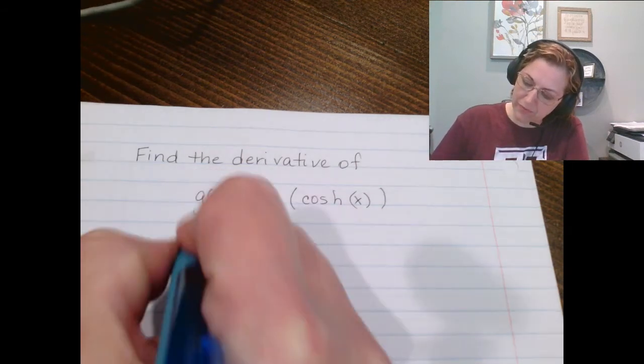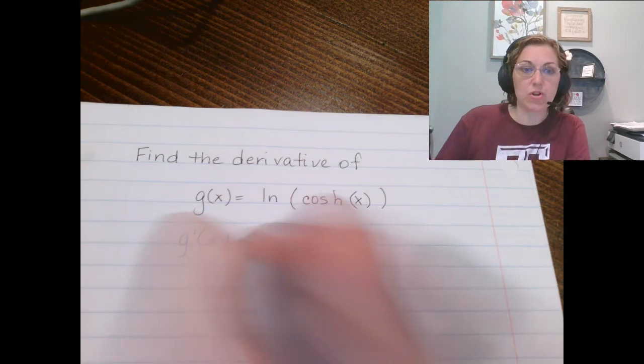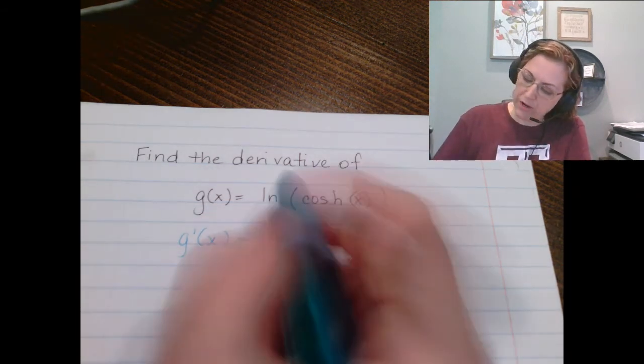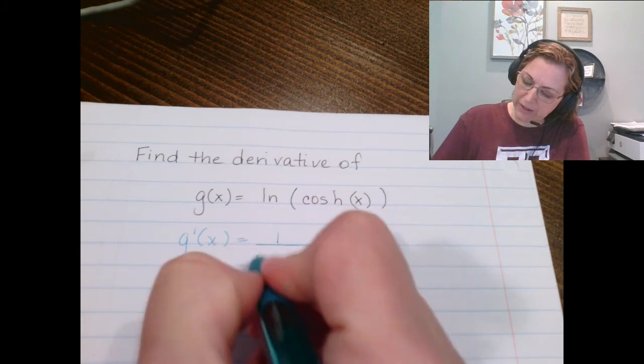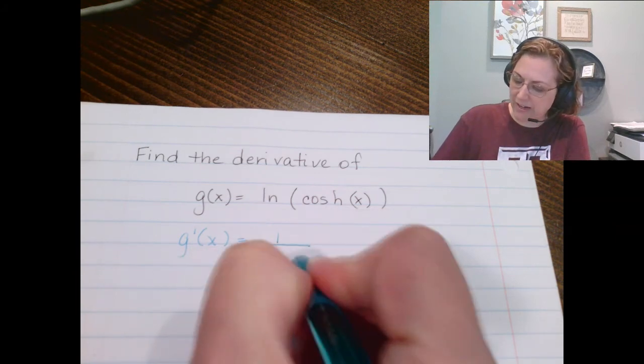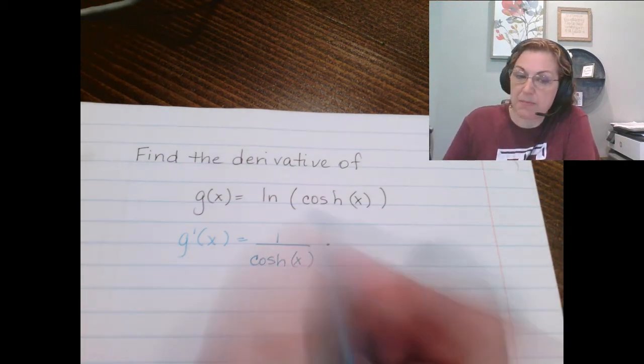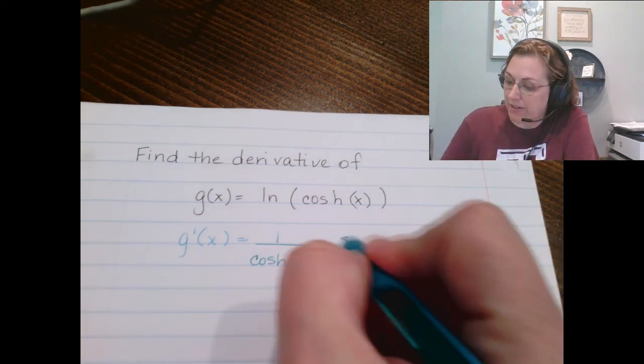The derivative of the natural log is one over whatever's inside, so we've got one over the hyperbolic cosine of x, and then we're going to multiply by the derivative of that hyperbolic cosine, which is the hyperbolic sine.